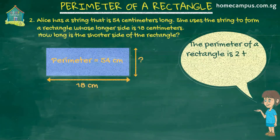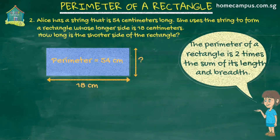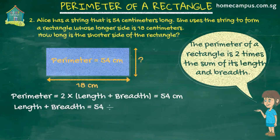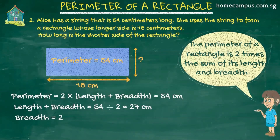All we really have to do is plug the numbers into the perimeter formula to find the unknown piece — it's similar to what we did in the previous question. Perimeter is 2 times (length plus breadth), which is 54 centimeters. So length plus breadth would be 54 divided by 2, or 27 centimeters. We know the length is 18 centimeters, so the breadth will be 27 minus 18, or 9 centimeters. Hence, the shorter side of the rectangle is 9 centimeters.